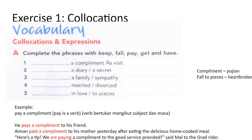For exercise one, fill in the blanks using: keep, fall, pay, get, have. A compliment is a pujian. Visit means kunjung. Diary — secret means rahsia. Sympathy means memberi rasa belas kasihan kepada orang. Married means kahwin, divorce means cerai. In love means jatuh cinta. In pieces means your feelings are bercelaru, heartbroken.